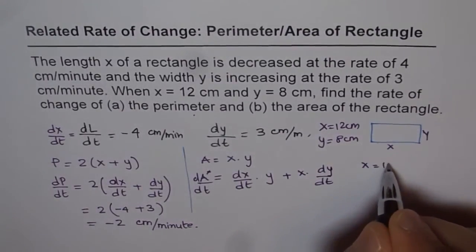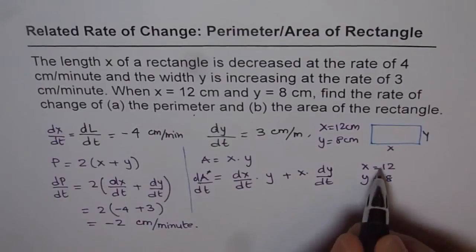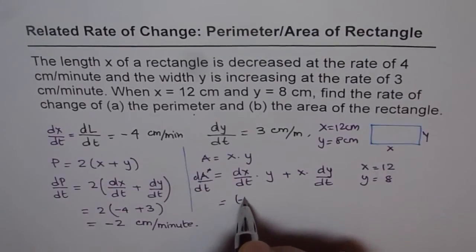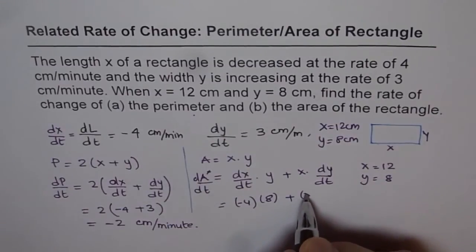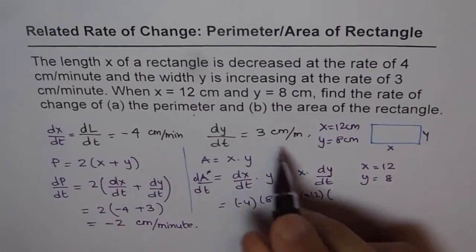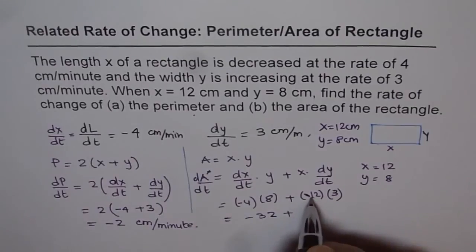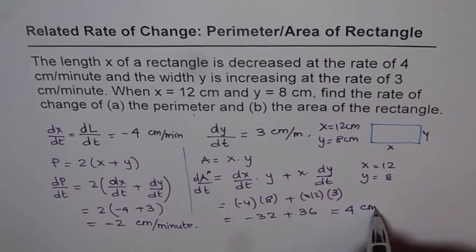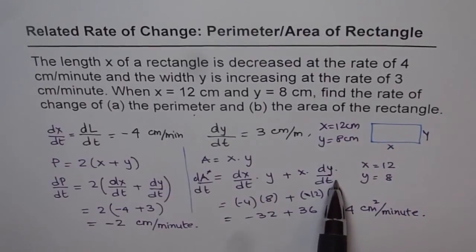At x equals 12 and y equals 8, we can plug in these values to find the rate of change of area. dx/dt is given as minus 4, so we get minus 4 times 8 plus 12 times 3, which gives minus 32 plus 36, and that gives a value of plus 4. The units are cm² per minute.